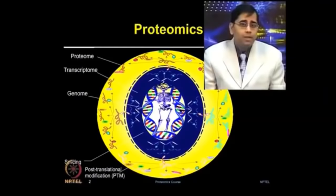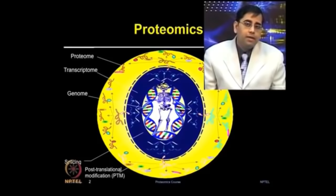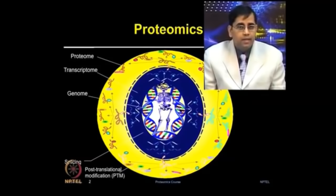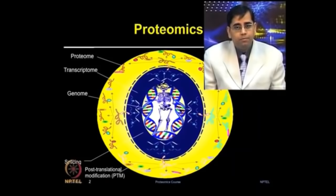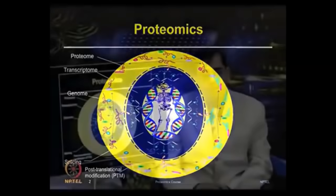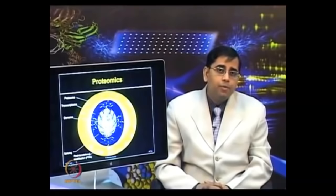The proteome describes the protein complement expressed by the genome, or more precisely, the protein complement of a given cell at a given time, including the set of all protein isoforms and its modifications. The study of the entire compendium of proteins encoded by the genome is known as proteomics. The extent of diversity and complexity due to alternative splicing and post-translational modifications is tremendous; therefore, studying proteins and proteome are very important.